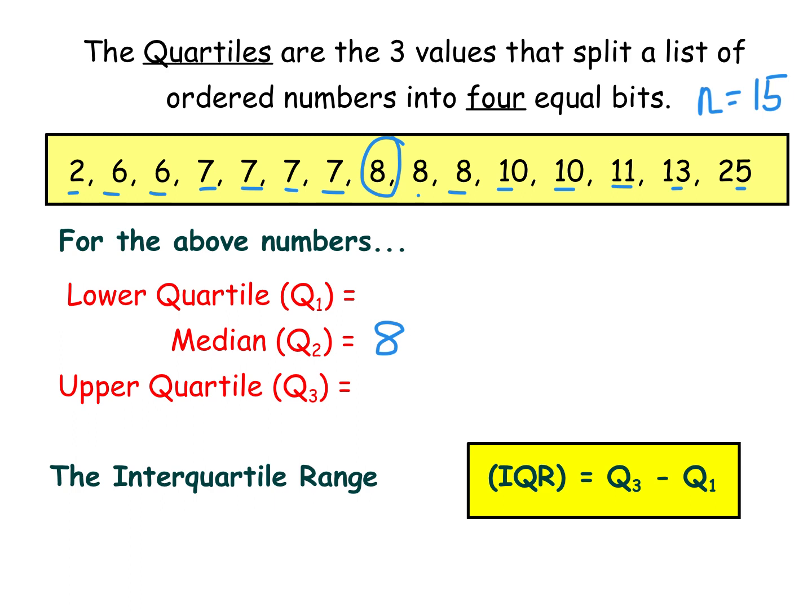We then have to find the lower quartile, which is halfway down this lower half. So I'm going to take that 8 out of the picture just now and focus on these seven numbers down the bottom. If I can count in, I can go three numbers, circle that seven and see how I've got three numbers on the other side. So that's symmetrical. So my Q1 is 7.